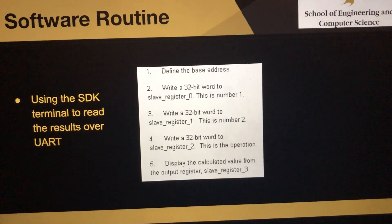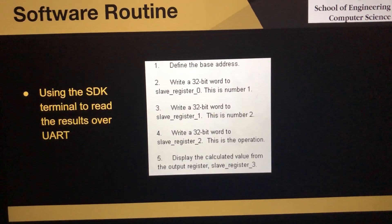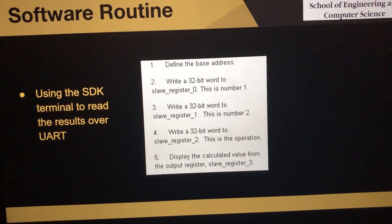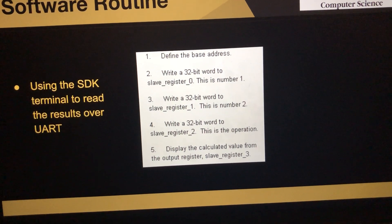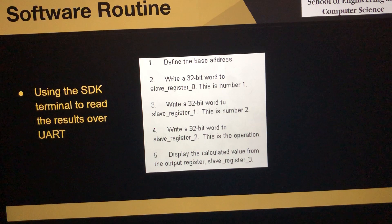This is our software routine we used in the SDK terminal. First, we define the base address. Then we write a 32-bit word to slave register 0, which represents the first number. We write a second 32-bit word to slave register 1, which is the second number.